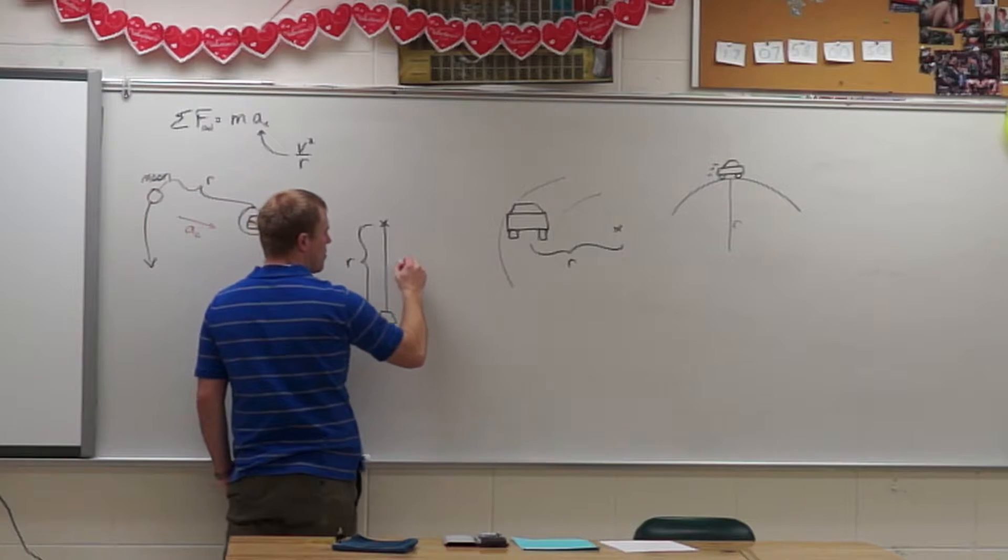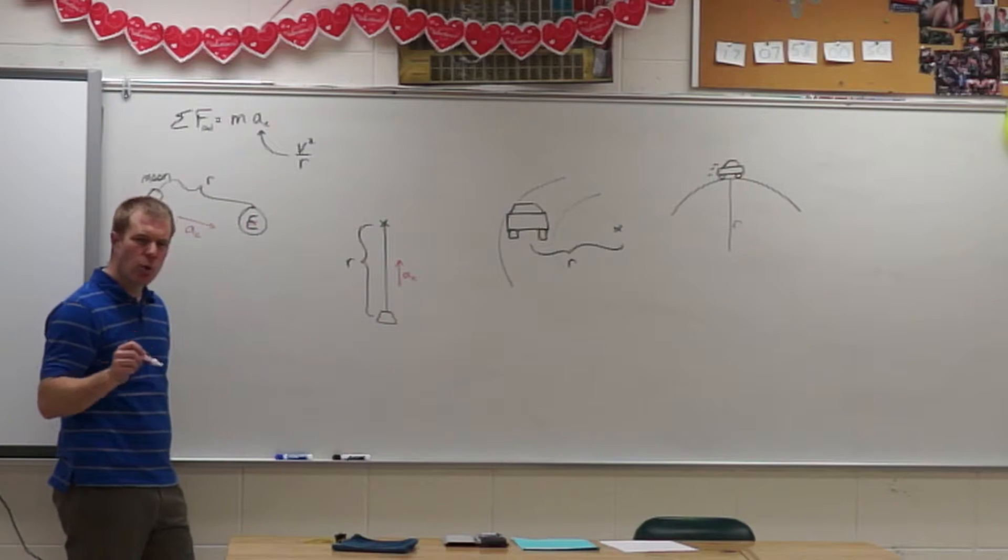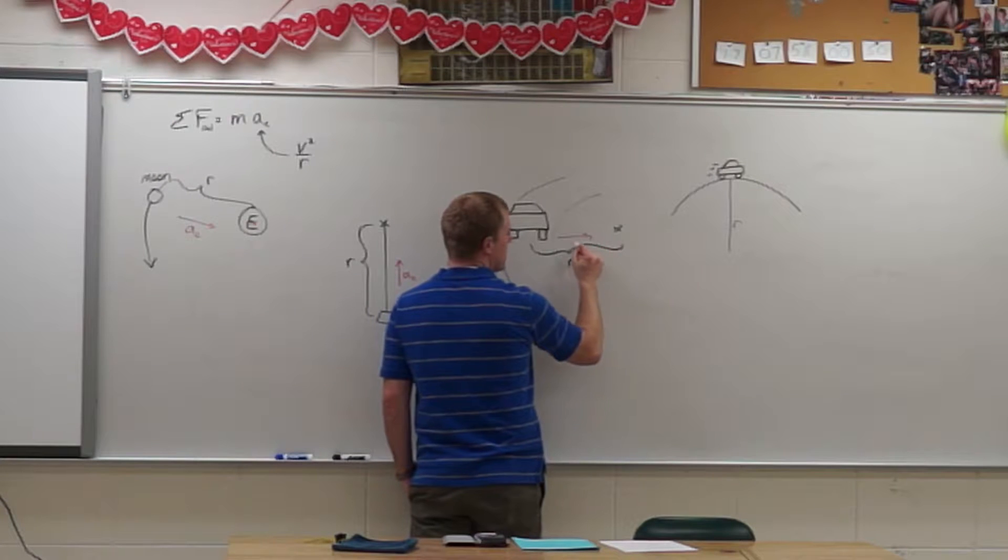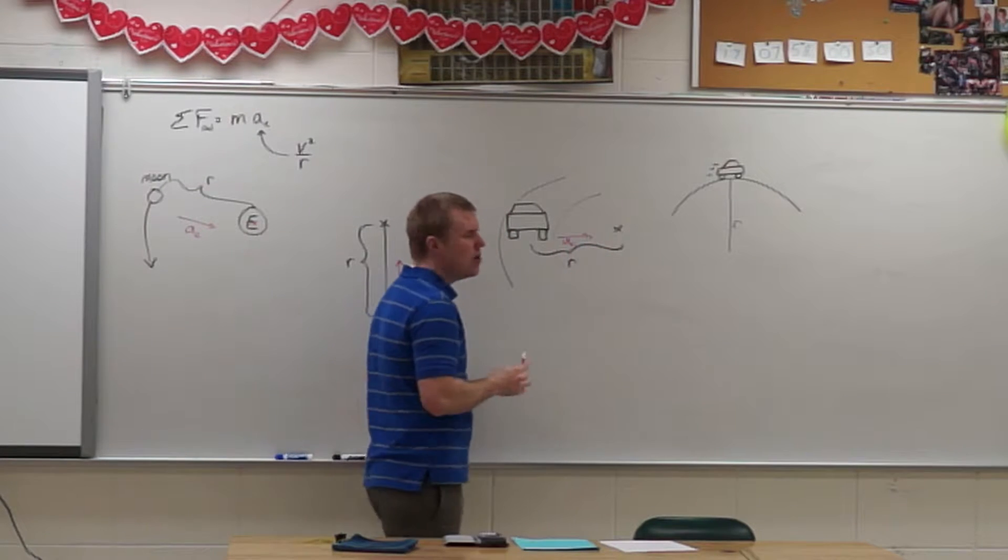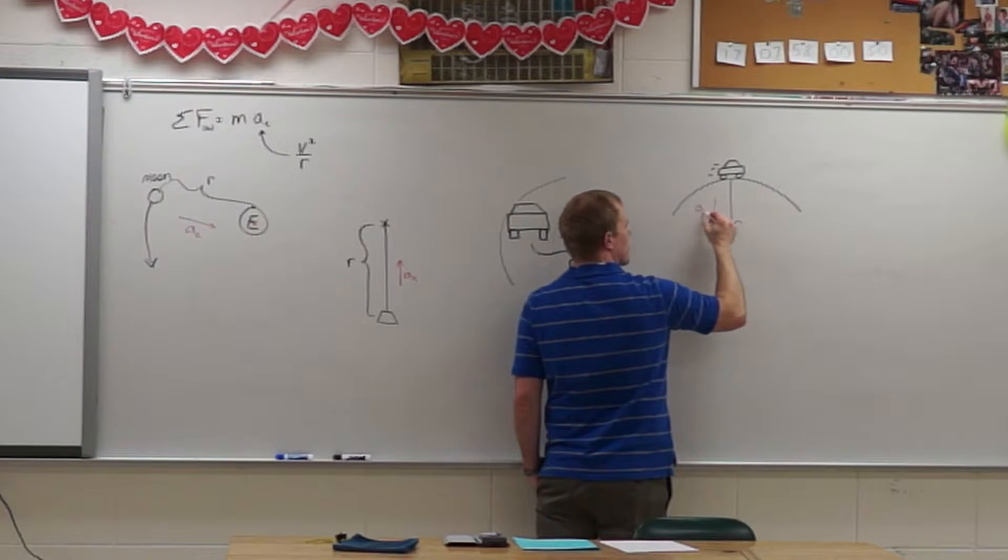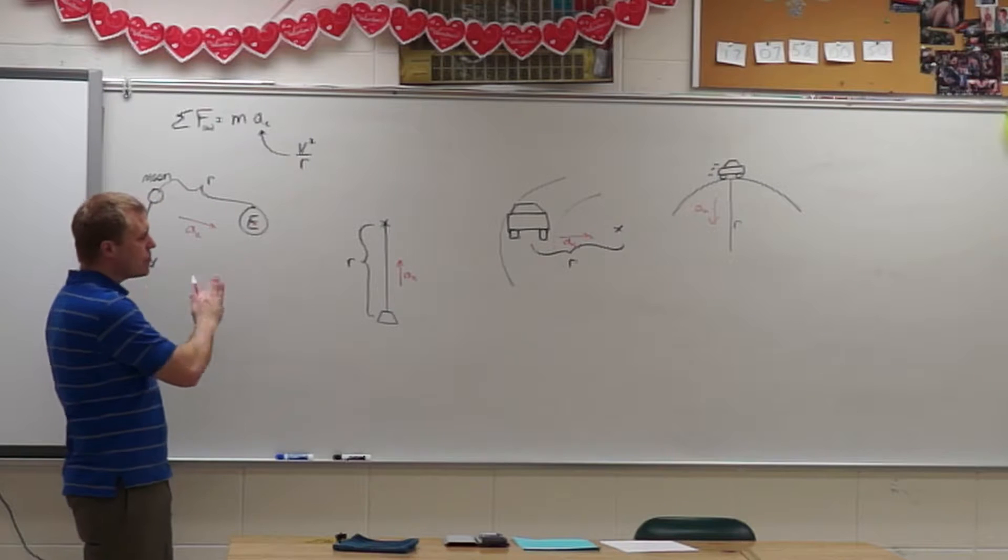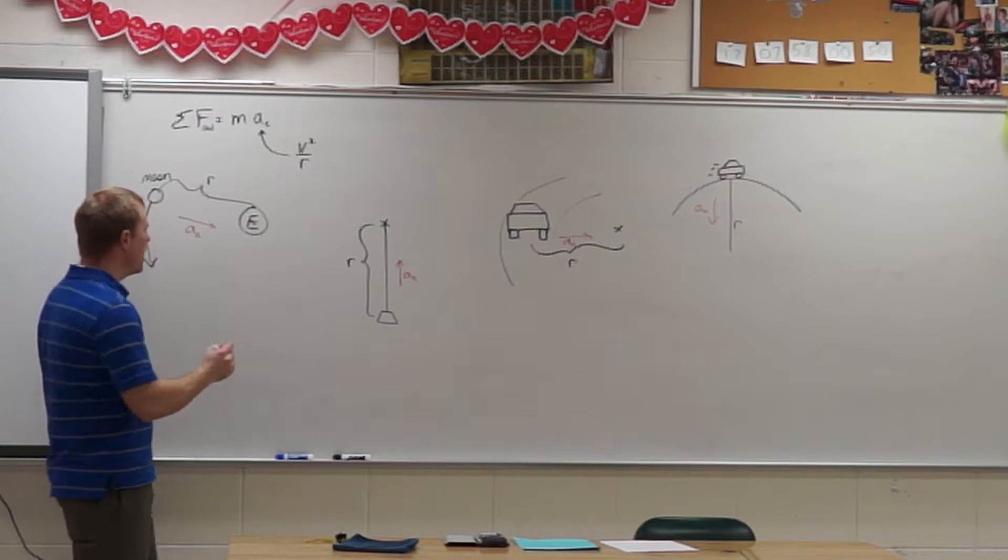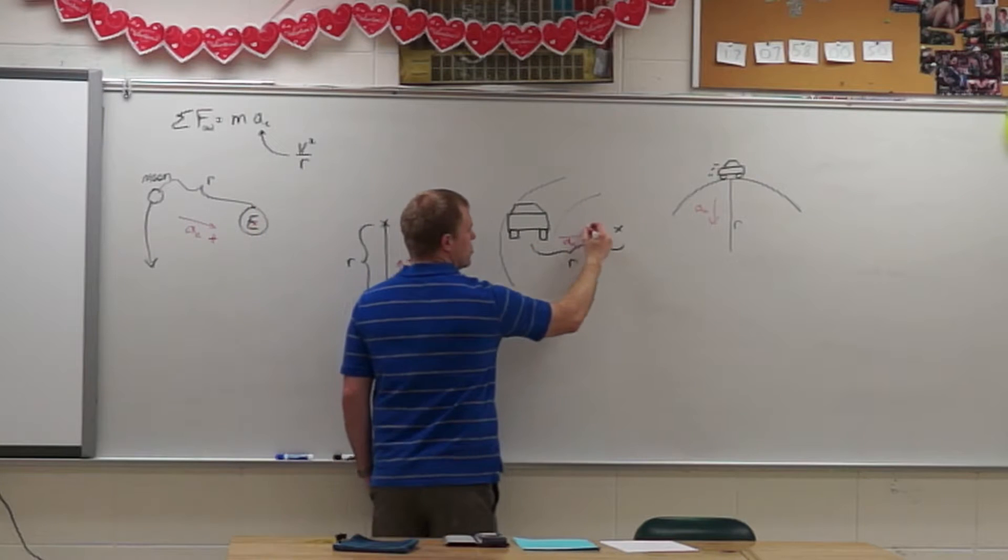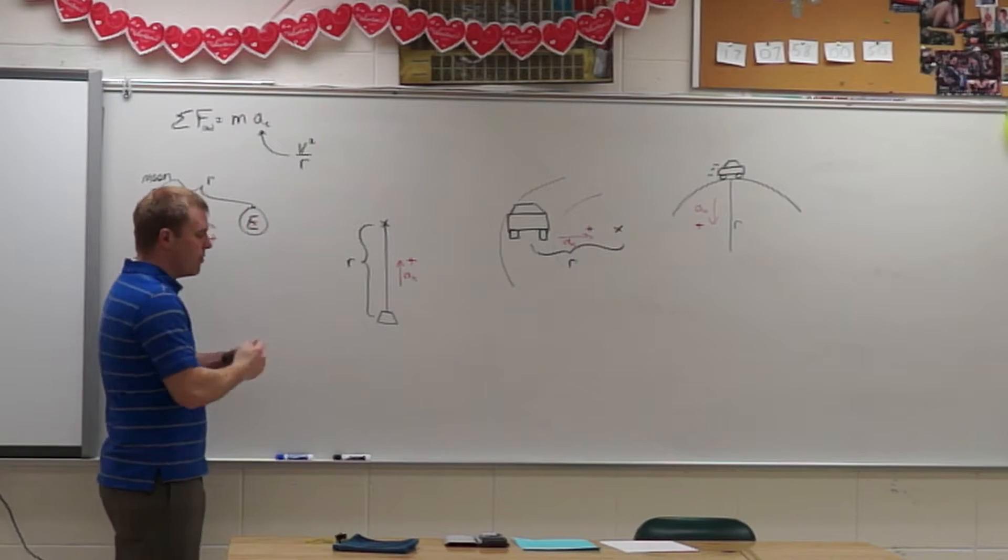For that stopper going around, this is the direction of Ac, radially inward toward that axis of rotation. For the car going around the corner, this is the direction of Ac. For that car going over the top of the hill, this is the direction of Ac. So the first thing I want to do is put that direction for Ac on there because that is going to be my positive direction.